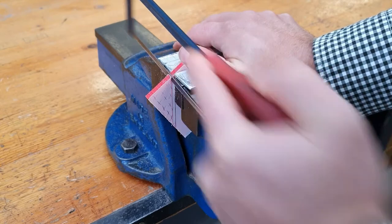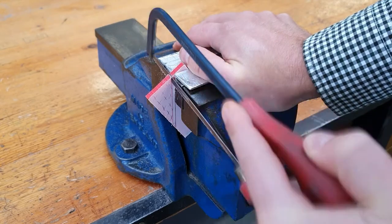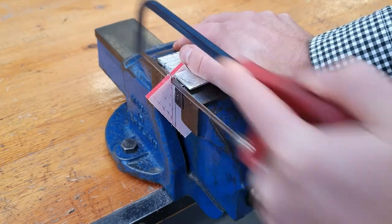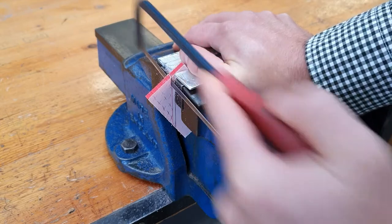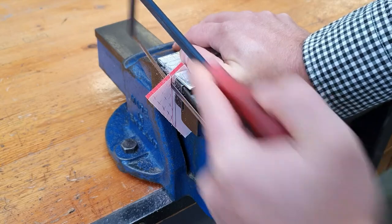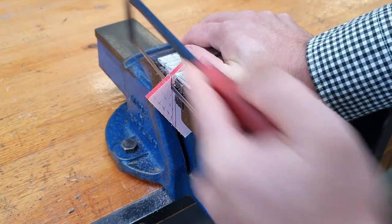Make sure you're using the full stroke of the hacksaw. If we go out a little bit, that's fine. As long as we're not going into our piece, filing is very easy to do, so if we go out from our line a little bit, that's okay.